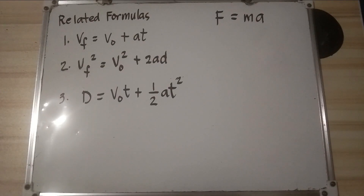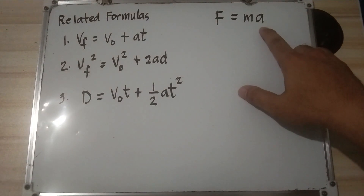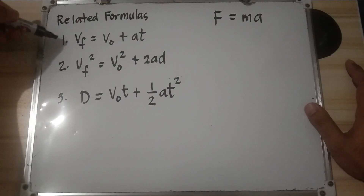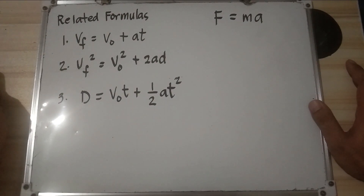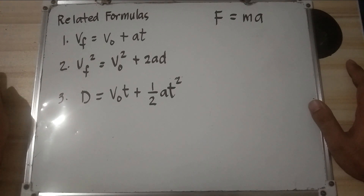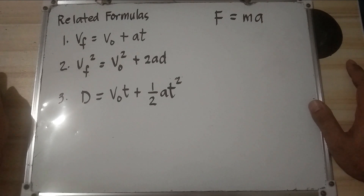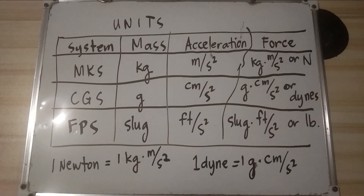Since the Second Law of Motion involves acceleration, we have related kinematic formulas. First: v_f equals v_o plus at, where v_f is final velocity, v_o is initial velocity, a is acceleration, and t is time. Second: v_f squared equals v_o squared plus 2ad, where d is distance or displacement. Third: d equals v_o times t plus one-half at squared.